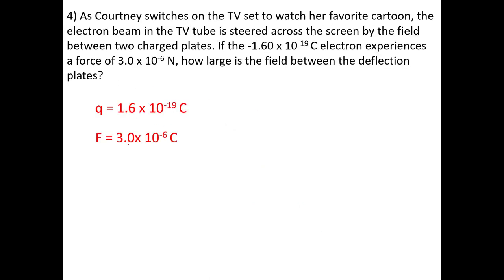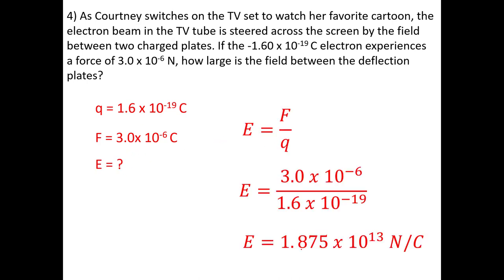In the next question, you're given a charge that is electrons, so it's going to be negative. We're not going to use negatives for our charges here — just look at the charges creating the field to decide direction. A positive charge would go towards a negative, so in this electrical field the direction would be towards. Here we have charge and force, and we're looking for E — plug in the values and get 1.875 × 10¹³ newton-coulombs.